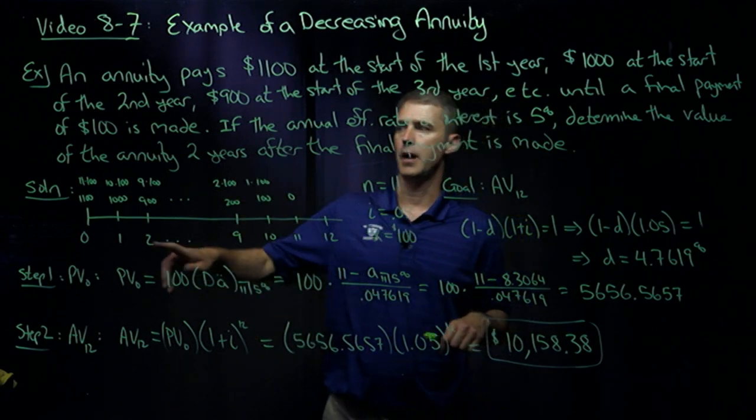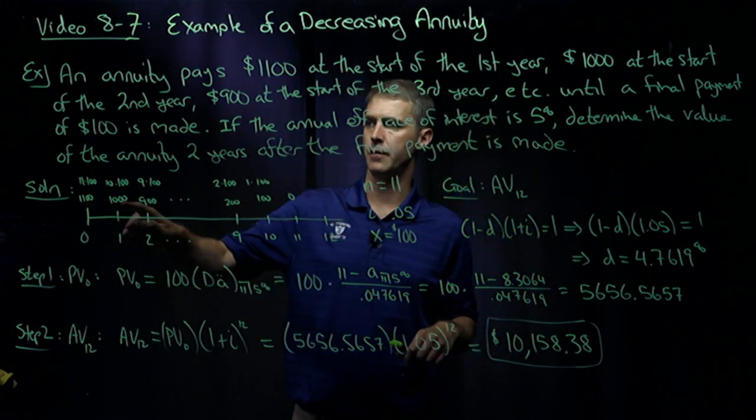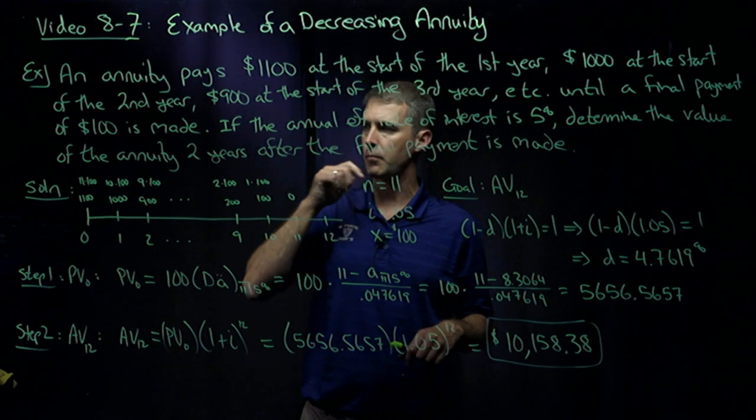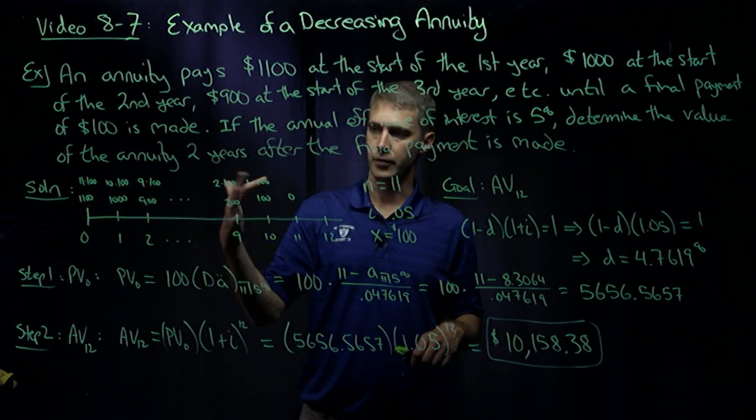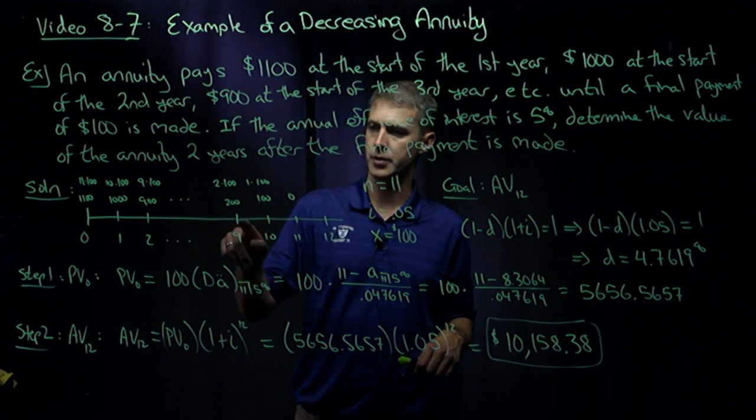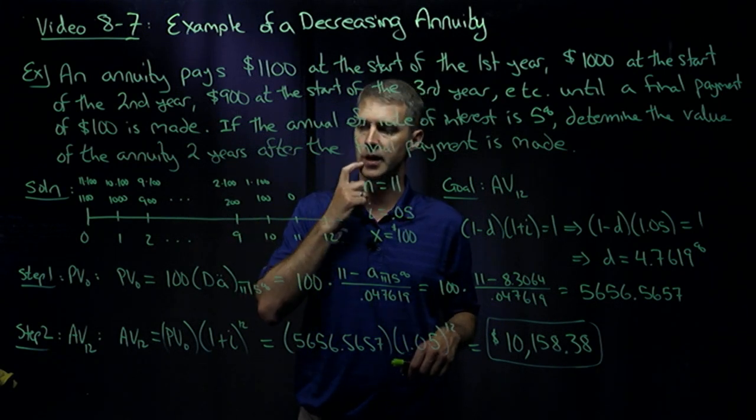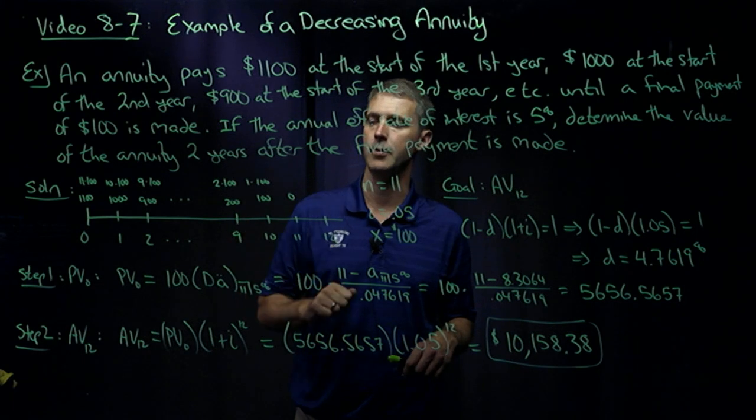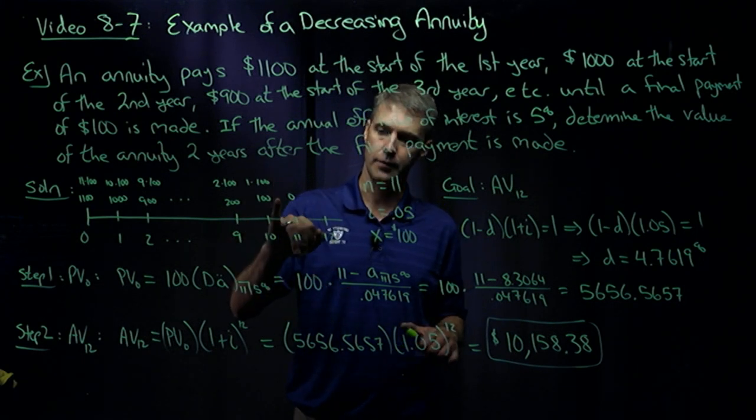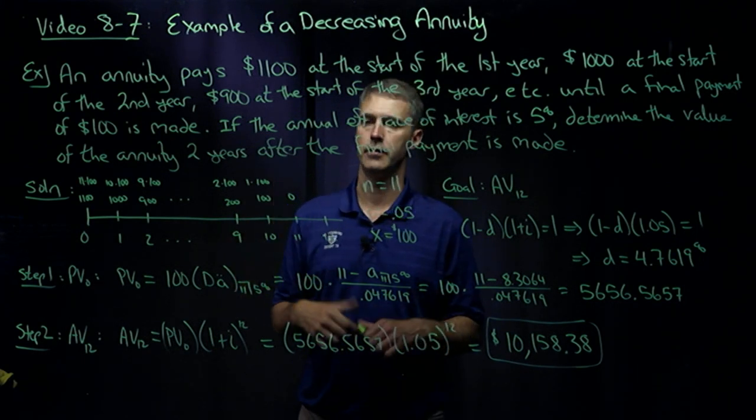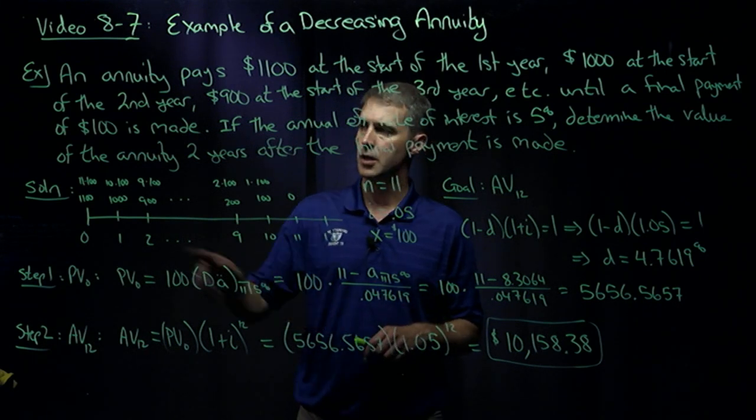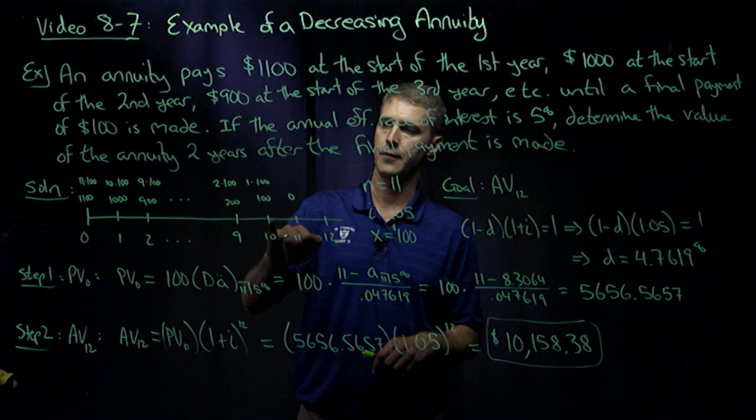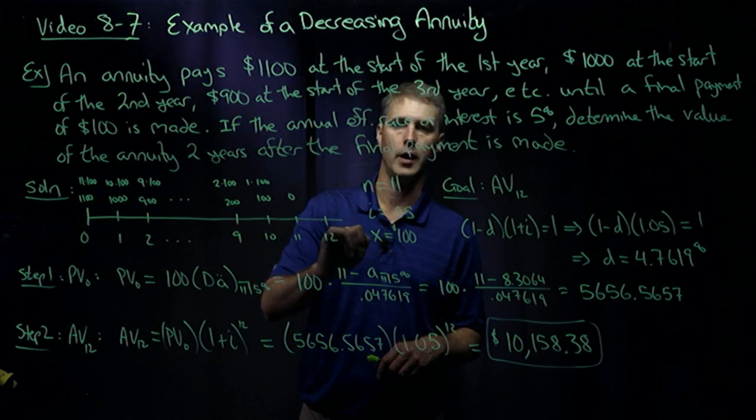So if I time value it, the numbers in the bottom row here are the original payments, $1,100, $1,000, $900, and if you use your fingers or whatever method you use, at the beginning of the 10th year, time 9, you'd have a payment of $200, and the beginning of the 11th year, time 10, you'd have a payment of $100, and then at time 11, you'd have $0. So there's the annuity, and two years after the final payment is time 12.